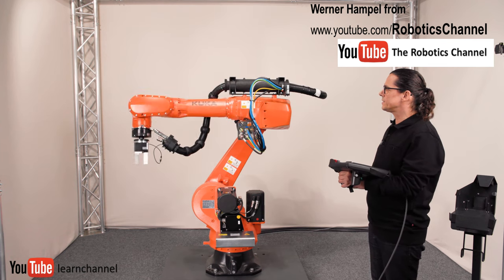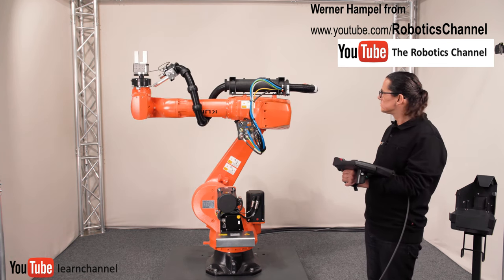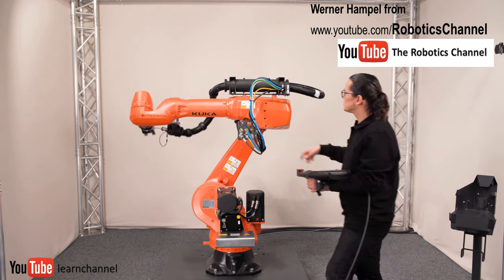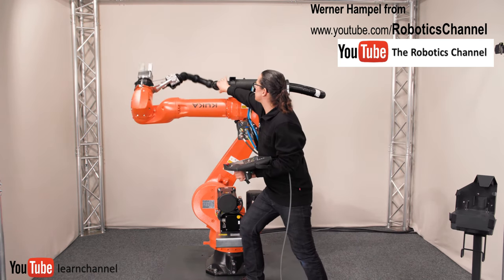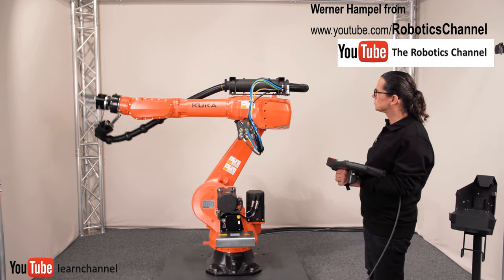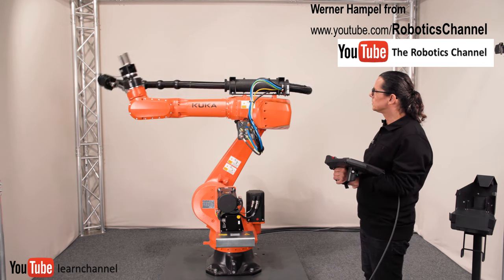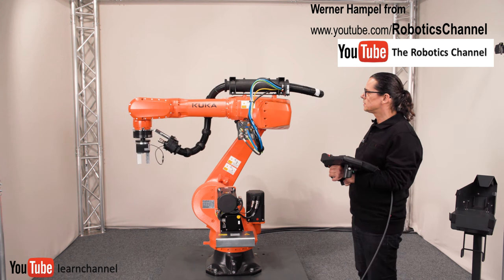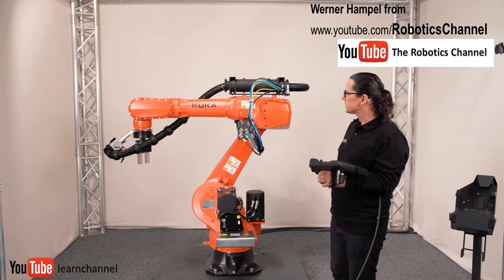And the first hand axis is axis 4. And the tube package is moving with it. This is axis 5. And here we have axis 6.